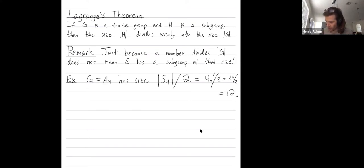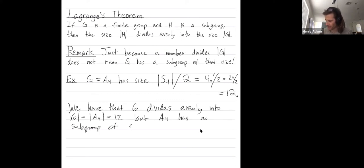And then what I'll claim is that we have that six divides evenly into the size of G, which in this case is the size of A4, which is 12. But A4 has no subgroup of size six.